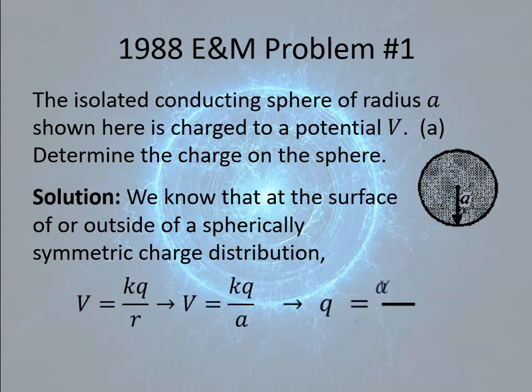We know the equation for a spherically symmetric charge distribution, or at least the potential on a spherically symmetric charge distribution. That is KQ over R, where R is the distance from it, but in this case the radius of the object. We're saying that it's charged to a potential V, which means that the potential at the surface is V equals KQ over A, so the amount of charge on the sphere is therefore Q equals AV over K.